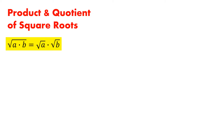For any positive numbers A and B, these two equations are always true. First, the square root of A times B is equal to the product of square root of A and square root of B. And the second, the square root of A divided by B is equal to the quotient of square root of A and square root of B.